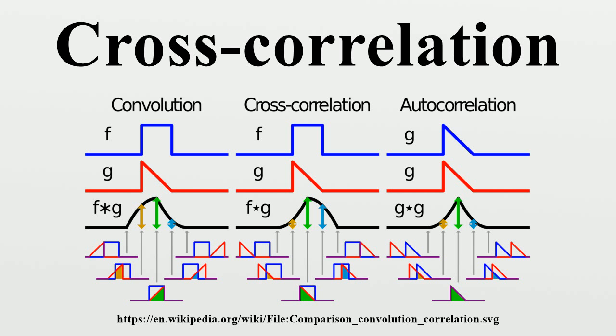The cross-correlation is related to the spectral density. The cross-correlation of a convolution of f and h with the function g is the convolution of the cross-correlation of f and g with the kernel h.